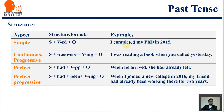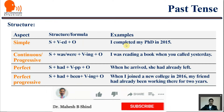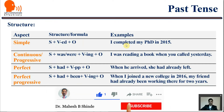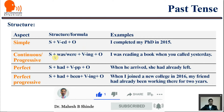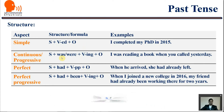For example: 'I completed my PhD in 2015.' I'm talking about my PhD — the action has happened in the past. I completed my PhD in 2015. When to say 'I have completed my PhD,' we will see in the next examples.